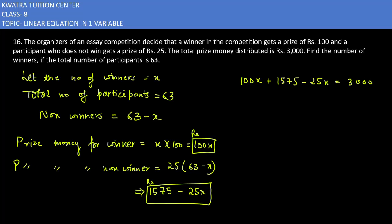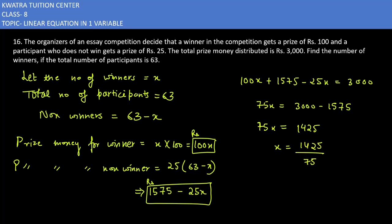So 100x minus 25x gives us 75x, which equals 3000 minus 1575, that is 1425. Dividing both sides by 75, the value we get is 19. So the number of winners is 19.